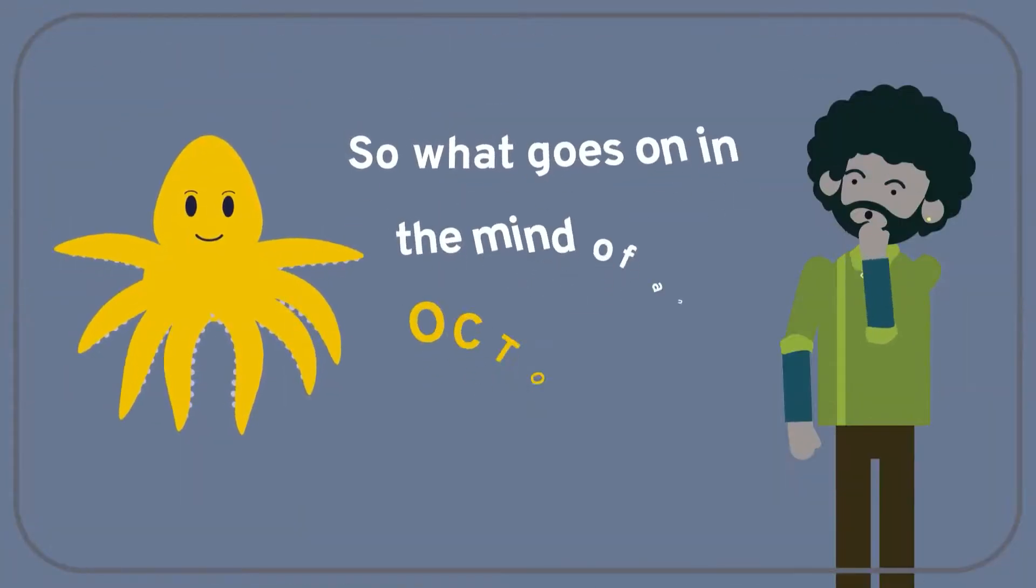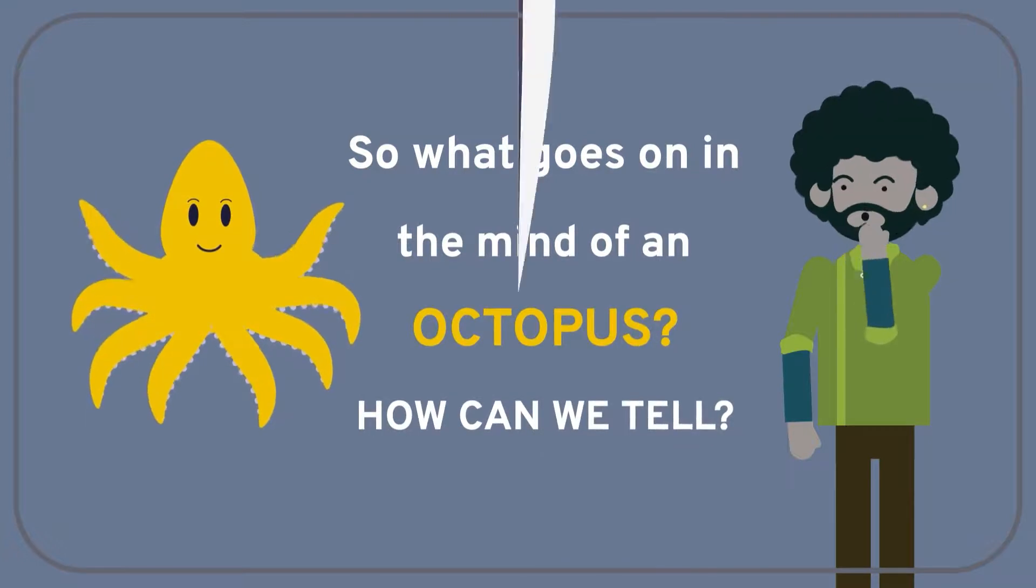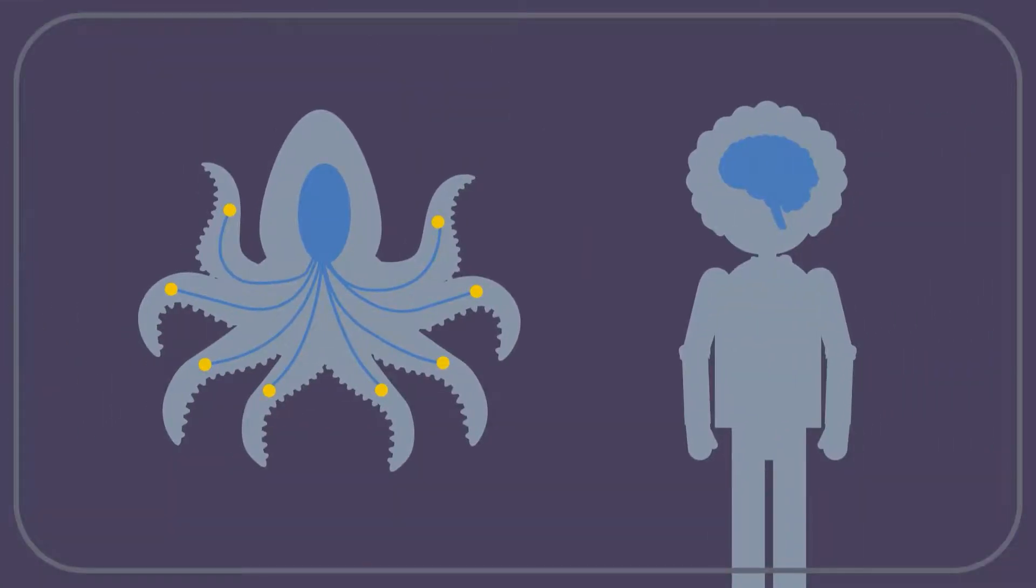So what goes on in the mind of an octopus? How can we tell? Well, it is true that octopuses have very different brains from us.